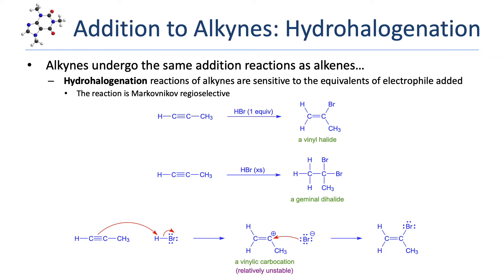Hydrohalogenation reactions of alkynes are sensitive to the number of equivalents of electrophile that are added. In this example, you can see that one equivalent of HBr has been added to one propyne, and the result is a vinyl halide, adding HBr across one of the two carbon-carbon pi bonds. Because the reaction has Markovnikov regioselectivity, the bromine is placed on the more substituted carbon of the alkyne.